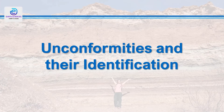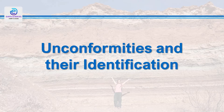Now let's learn about unconformable contacts. A break in the stratigraphic record takes place when sediment is not being deposited or when some previously deposited sediment has been removed by erosion. Such a break in the stratigraphic record is called a hiatus, and the indication of a hiatus in the stratigraphic record is known as an unconformity. In other words, an unconformity is a surface indicative of either a break in sedimentation or a period of erosion separating two different strata. This period can be long or short.